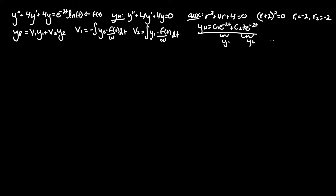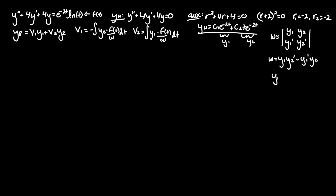The Wronskian tells us whether two functions are linearly independent. Using the determinant form, W = y₁y₂' - y₁'y₂, where y₁ = e^(-2t) and y₂ = te^(-2t). We need to compute their respective derivatives.